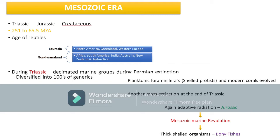There was another mass extinction at the end of the Triassic, but during the Jurassic, rapid adaptive radiation occurred. Adaptive radiation means from a single species, different numbers of species evolved due to different habitats and environmental conditions. A clear example of this is Darwin's finches — 14 types of finch birds, all evolved from a single common ancestor, adapted to different environmental conditions.